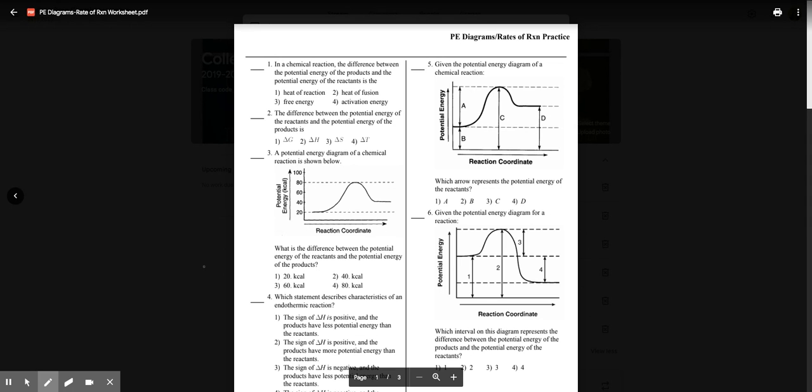So the difference, I'll just draw over here, the difference between the reactants and the products is in here, and we call that Delta H, which is also known as the heat of reaction. So that is choice one, the difference is Delta H.